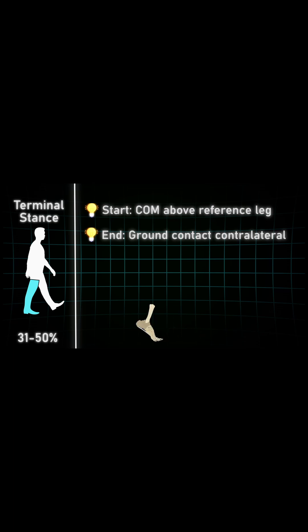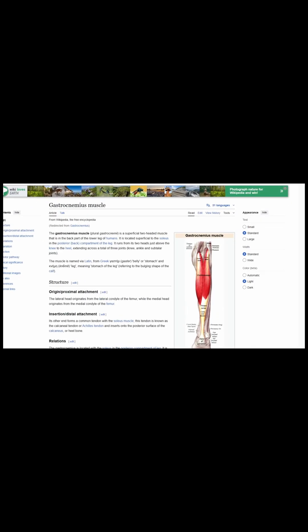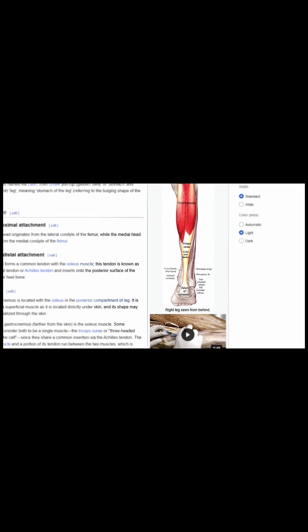The ankle joint is now maximally plantarflexed and pushes us forward. This creates high torques at the knee, which has to fight against high extension moments. Which muscle do you think does that? When we look up what the musculus gastrocnemius actually does...